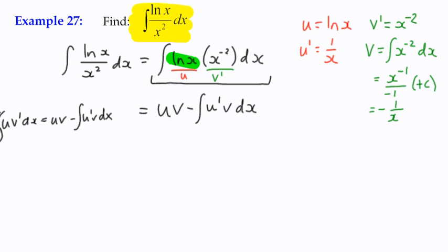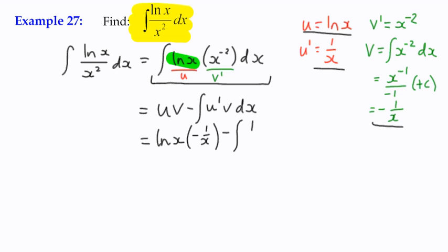That's the bit that we're going to actually write down. And take care to make sure that you substitute in carefully. u is log x multiplied by v, which is negative 1 over x minus the integral of u dash, which is 1 over x multiplied by v, which again is negative 1 over x with respect to x.